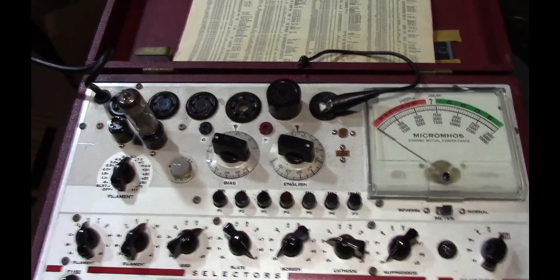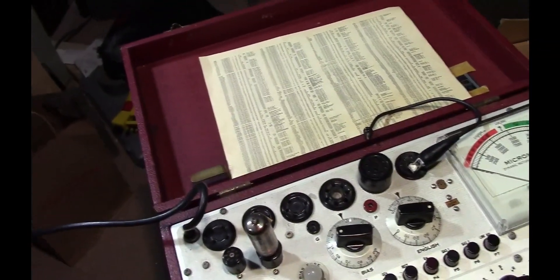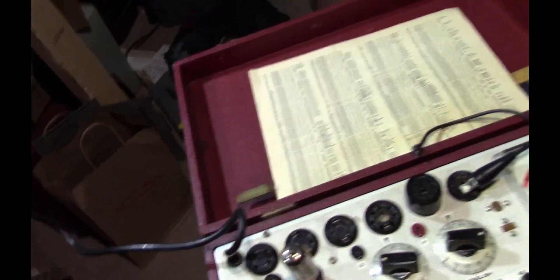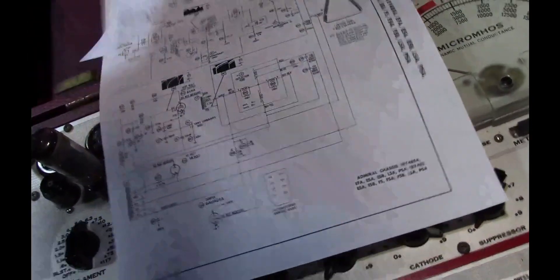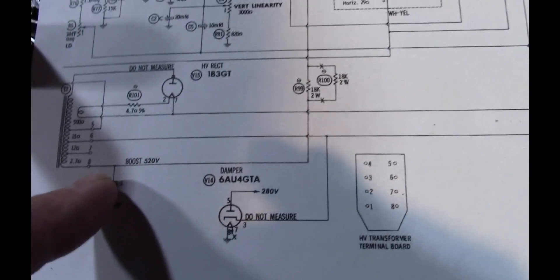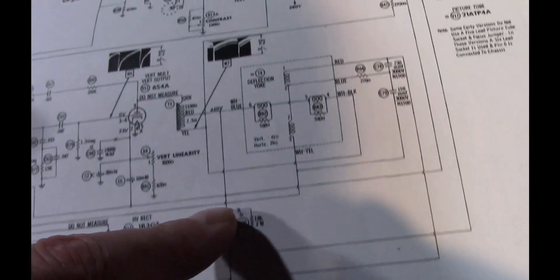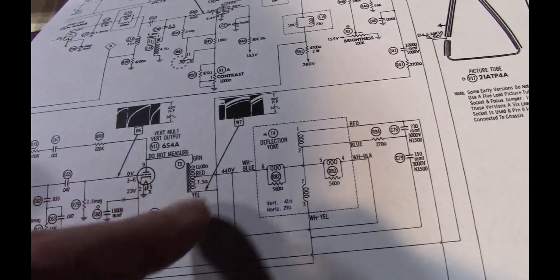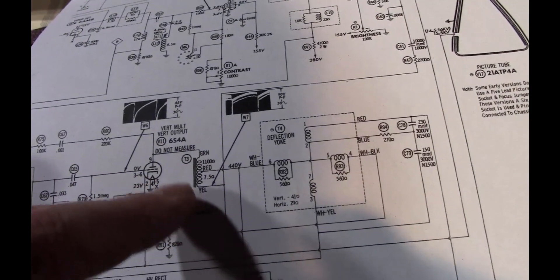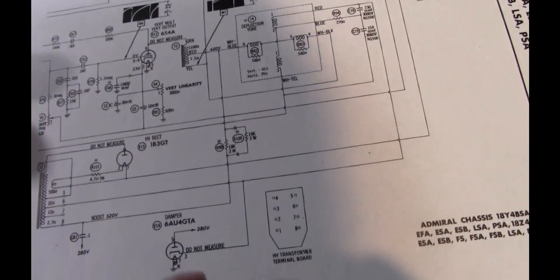So, my next thought is that we've got a lack of boost voltage very commonly in these sets. Looks like a boost voltage. That's right there. And that gets fed up into the vertical circuitry. In fact, yeah, it goes right up into the vertical output transformer and yoke. So, definitely if that's low, it's going to affect things.